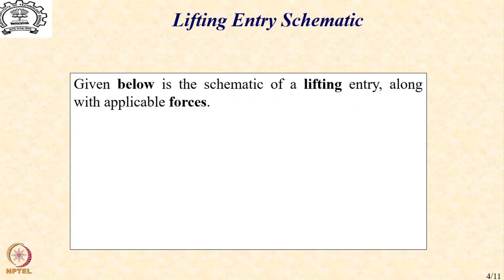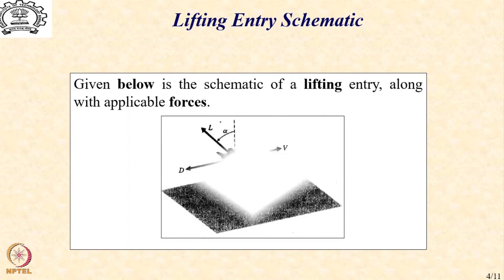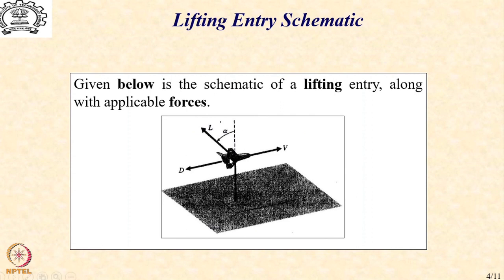I am sure you would have seen many pictures of space shuttle landing upon reentry to understand the implication of these aspects of an entry and return mission. Given below is a schematic of a lifting entry along with the various forces that act on the vehicle during this phase. So, we have an aircraft like vehicle that has a velocity v and has a drag which is opposite to the velocity vector and we have a lift which is normal to the velocity vector. In addition, its weight acts along the downward direction or the gravitational direction.